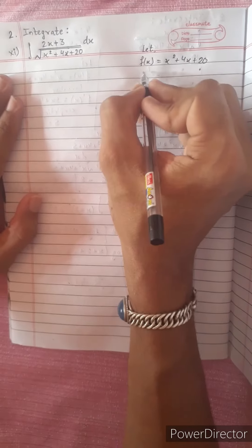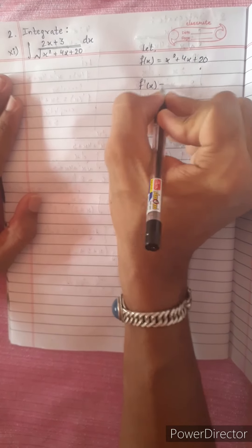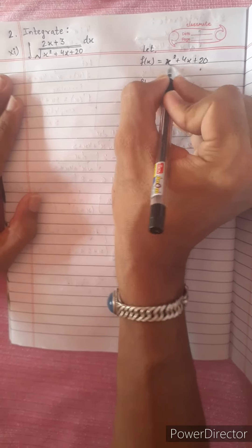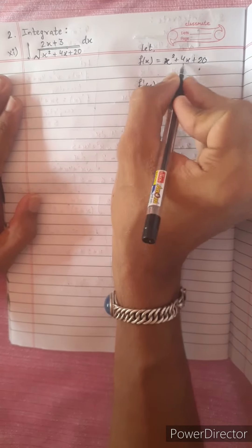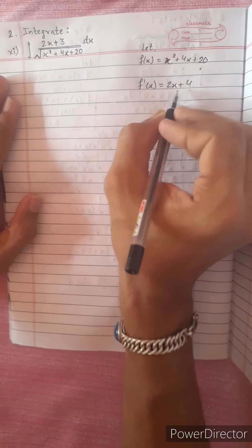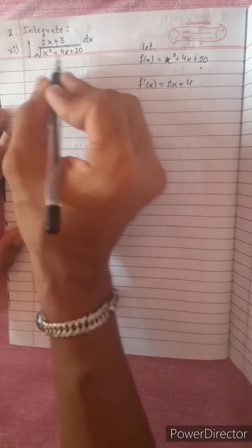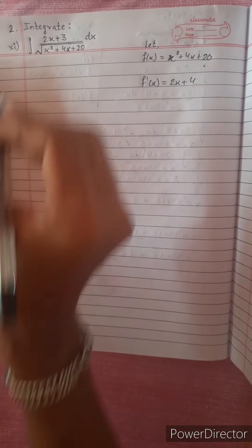We will try to get the derivative of f'(x). The derivative of x squared is 2x, and the derivative of 4x plus 20 gives 2x plus 4. This is the numerator. 2x plus 4 is the denominator.